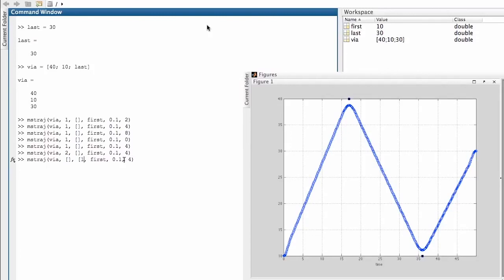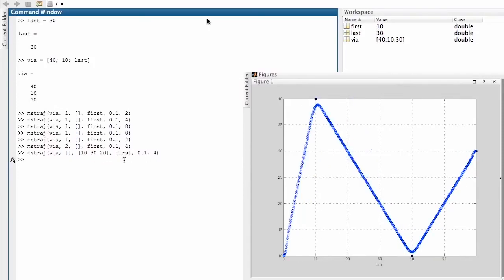I want the first segment to last for 10 seconds. I want the second segment to last for 30 seconds and I want the last segment to last for 20 seconds and now the trajectory looks like this.